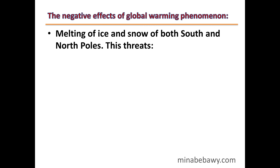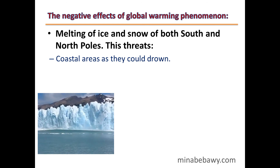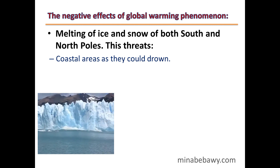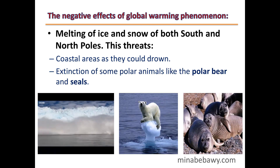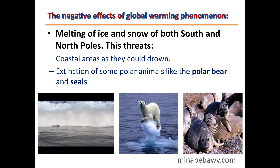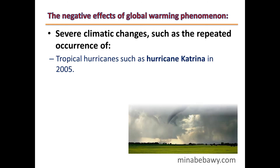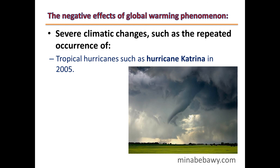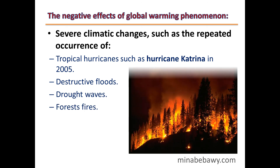What are the negative effects of global warming? First, melting of ice and snow at both the South and North Poles — melting ice increases the water level in seas and oceans, causing the drowning of coastal areas. It will also cause the extinction of some polar animals like polar bears and seals. Second, severe climatic changes such as the repeated occurrence of tropical hurricanes like Hurricane Katrina in 2005, destructive floods, drought waves, and forest fires.